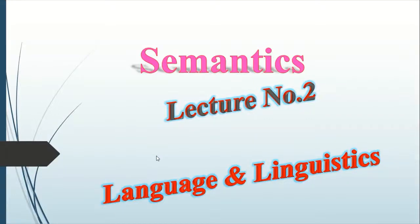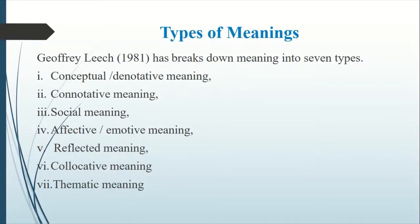Assalamualaikum friends, I hope you all are well and enjoying learning with Language and Linguistics. This is the second lecture about semantics, and in this lecture we are going to discuss types of meaning. According to Jeffrey Leach, there are seven types of meaning: conceptual meaning, connotative meaning, social meaning, affective meaning, reflective meaning, collocative meaning, and thematic meaning.